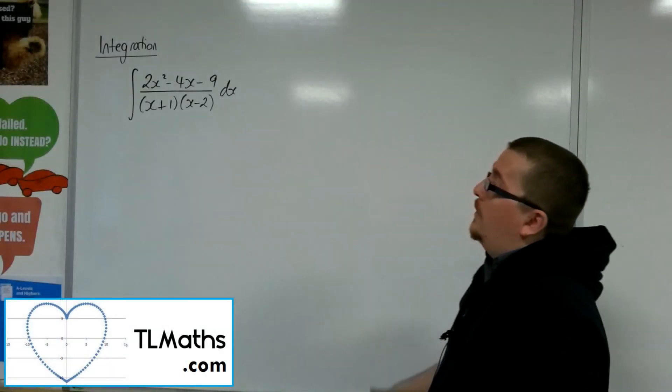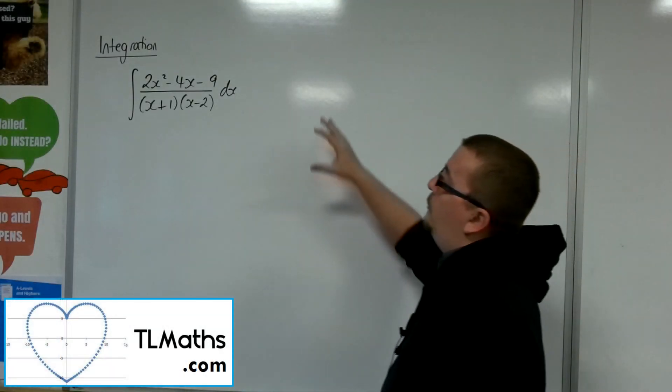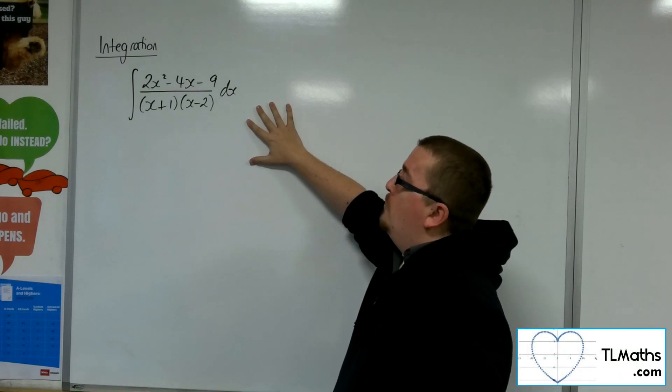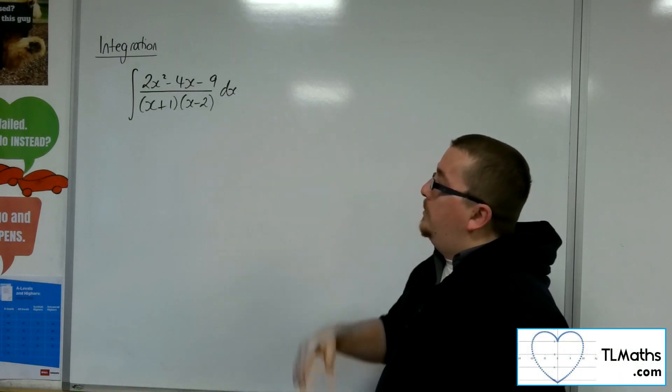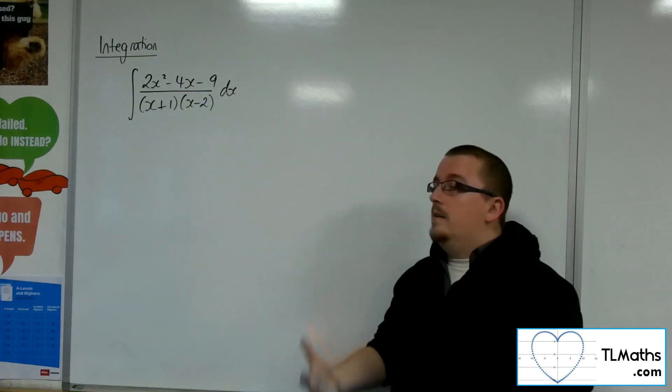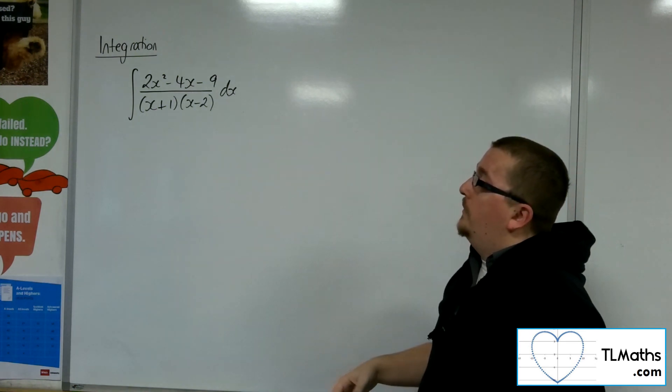Okay, so in this video we're going to go through an integral of 2x squared minus 4x minus 9 over x plus 1, x minus 2. And the reason why we're going to go through this example is because it's a little bit different to what we've done previously in the previous examples.